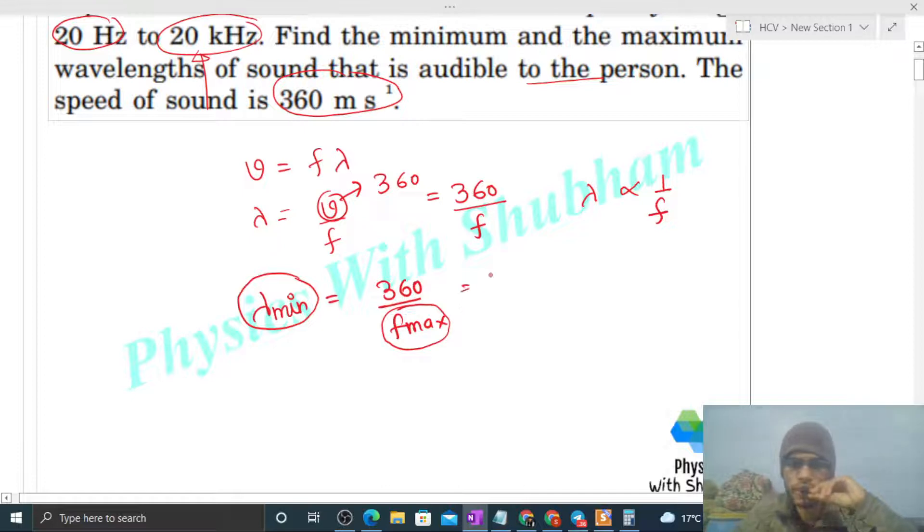So you can say 360 divided by 20 kilohertz, so it will be 10 raised to the power 3 Hertz. So if you solve this, it will be 18 into 10 raised to the power minus 3 meter, or you can say 18 millimeter.